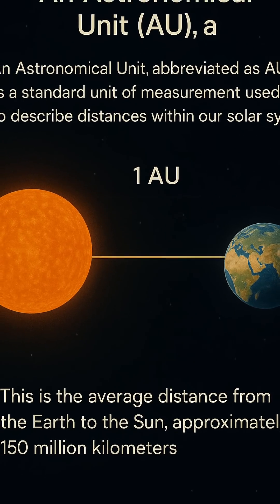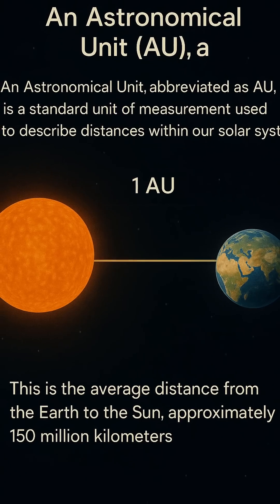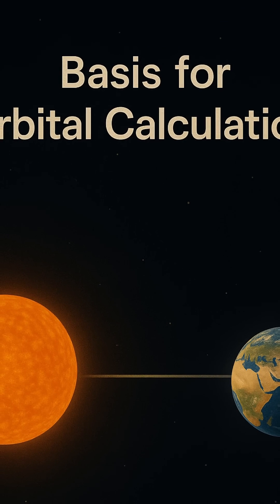Jupiter? That's roughly 5.2 AU. This makes it easier to grasp the relative distances and scales within our solar system.